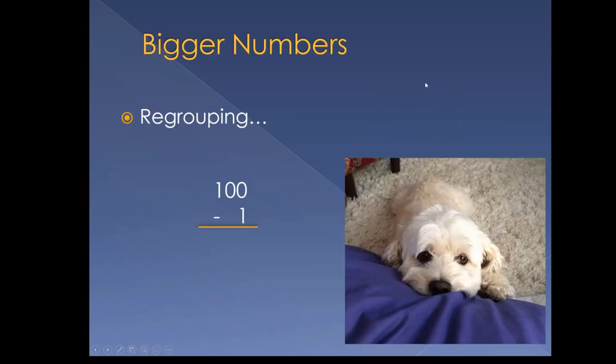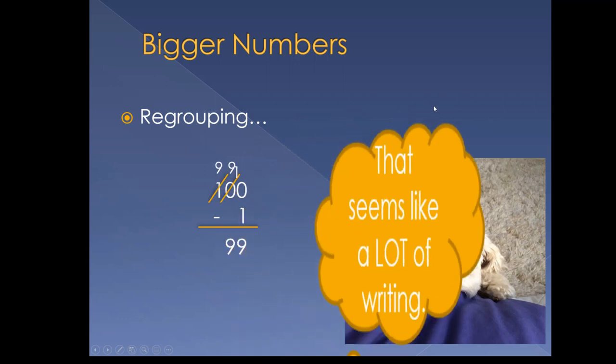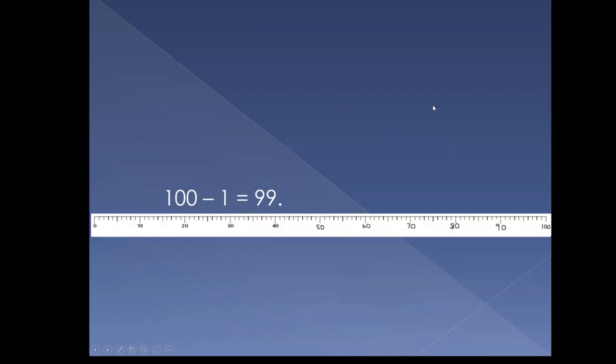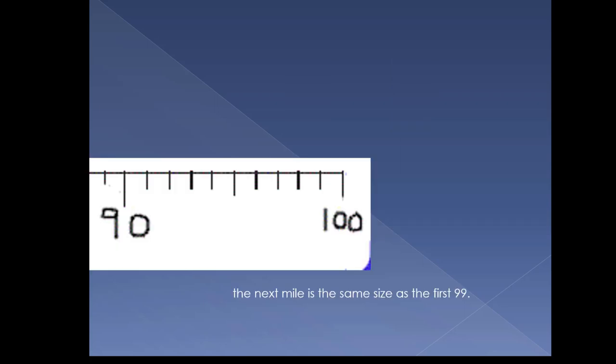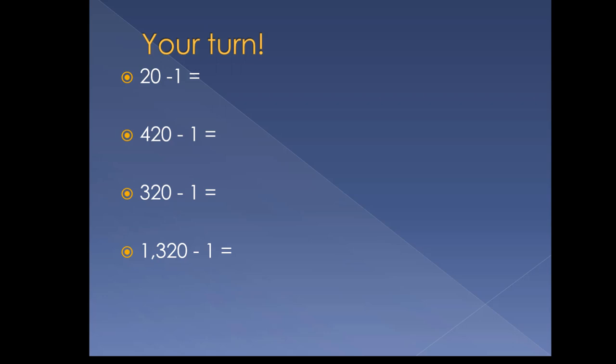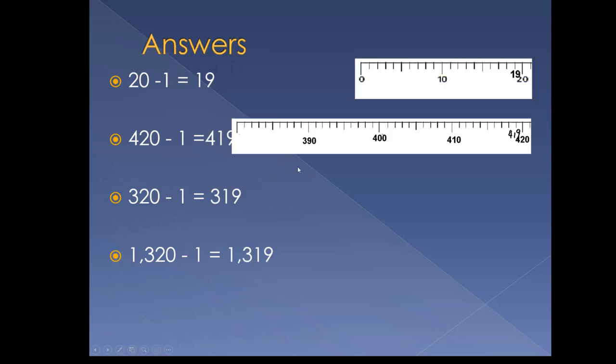This works for bigger numbers too. You could subtract 100 minus 1 by regrouping like this. That seems like a lot of writing. Or we could count back like mile markers on the road. 100 minus 1 equals 99. You don't have to see all of the first 99 to know they're there. Move backwards 1 to subtract 1. Your turn. Time to pause. Write these answers down then go to the answers on the next slide. Do you notice any patterns?